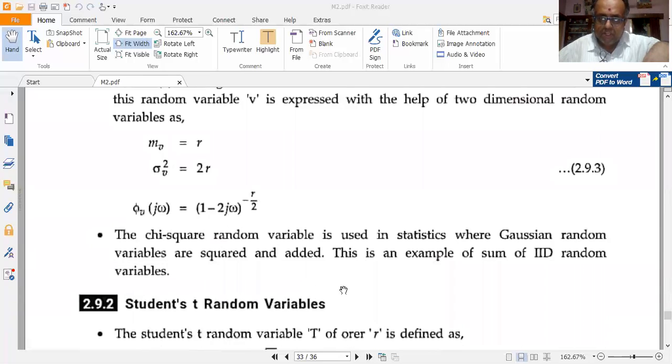This Chi-square distribution is exclusively used in statistics where Gaussian random variables are squared and added, and it is a typical illustration of the sum of IID random variables. Thank you.